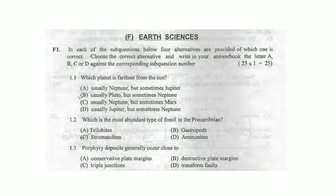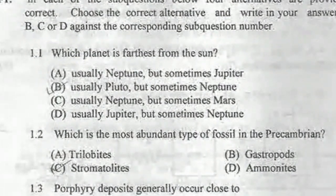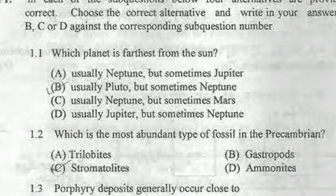First question: which planet is farthest from the sun? There are four options. Usually Neptune, but sometimes Jupiter. Usually Pluto, but sometimes Neptune. Usually Neptune, but sometimes Mars. Usually Jupiter, but sometimes Neptune. As we know, Pluto was the farthest planet, but Pluto is no longer considered a planet — it became a dwarf planet in 2006. So 'usually Pluto, but sometimes Neptune' is the correct answer.